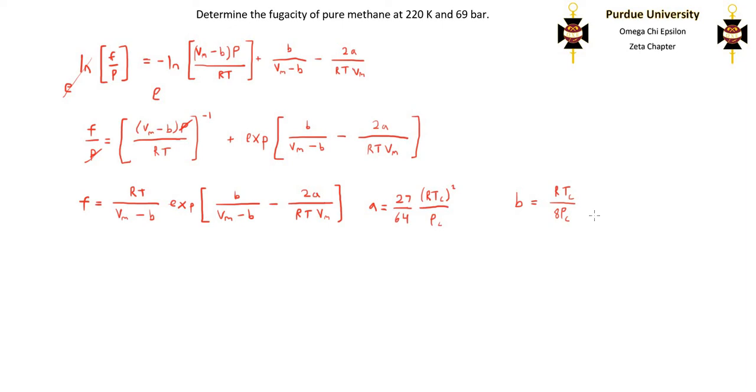And we'll find that the critical temperature is 190.6 Kelvin, and the critical pressure is 46 bar, which is also equal to 46 times 10 to the 5th pascals. When we plug these values in, we can solve for a and b.